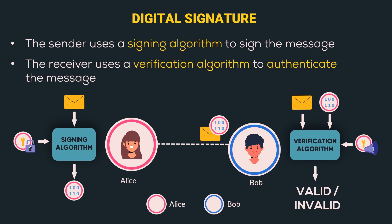As you can see, Alice had two keys in this case — one was a private key and the other was a public key. In cryptography, such systems are called public key cryptosystems. We will cover this topic in greater detail in future videos.